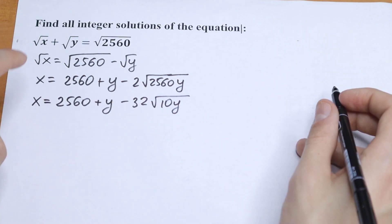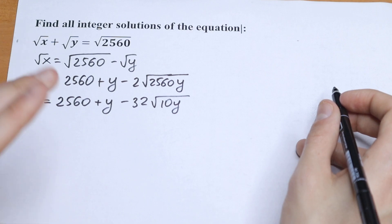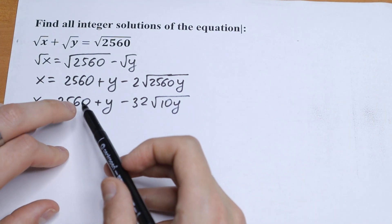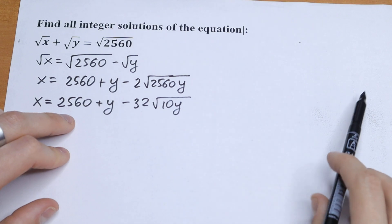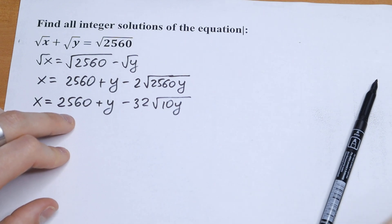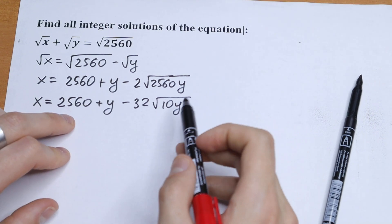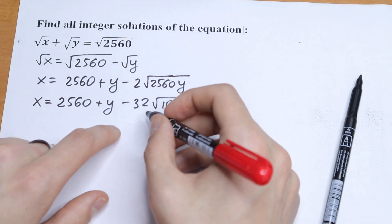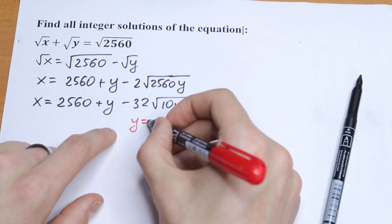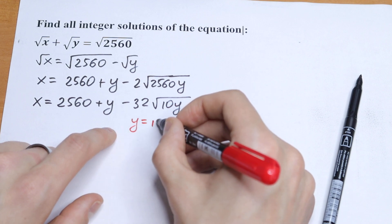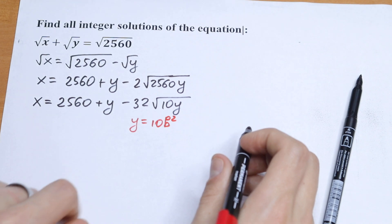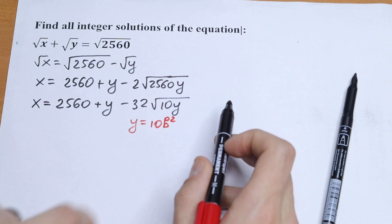After all simplifying, we have this expression. Since x must be an integer, the term 32 times square root of 10y must also be an integer. Therefore y must be 10 times a perfect square. So we set y equal to 10b squared as our substitution.